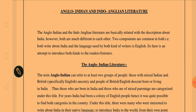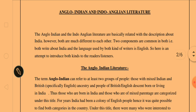Anglo-Indian and Indo-Anglican literature are basically related with the description about India. However, both are much different from each other. Two components are common in both: both write about India, and the language used by both kinds of writers is English. This is an attempt to introduce both kinds to the readers or the listeners.